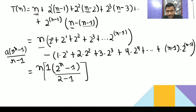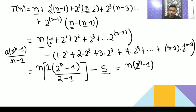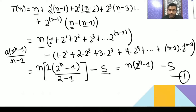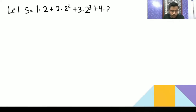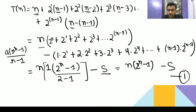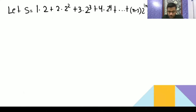So T(n) = n·(2^n - 1) - S. We will assume the arithmetic-geometric series as S and solve it separately. Let S = 1·2 + 2·2² + 3·2³ + 4·2⁴ + ... + (n-1)·2^(n-1). Whatever we get for S we will substitute back.